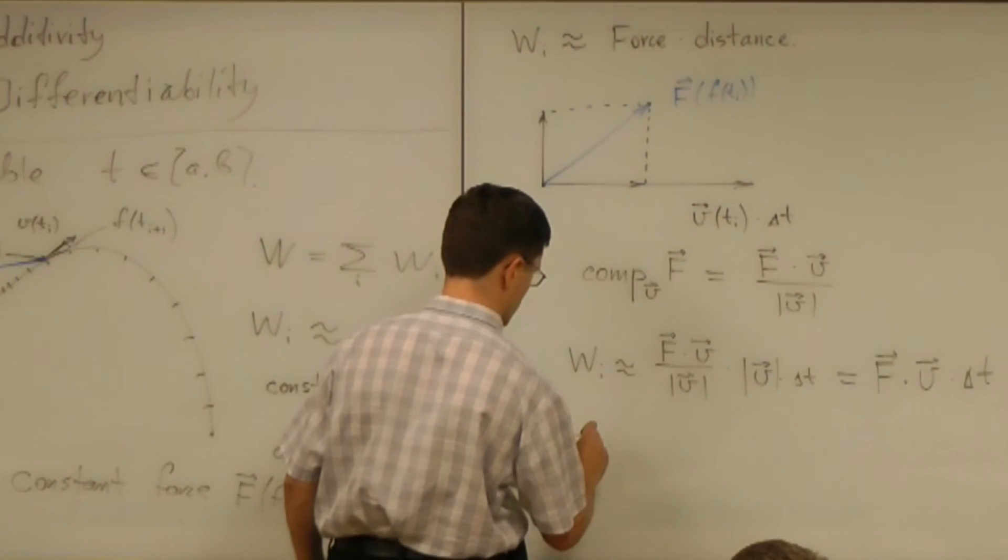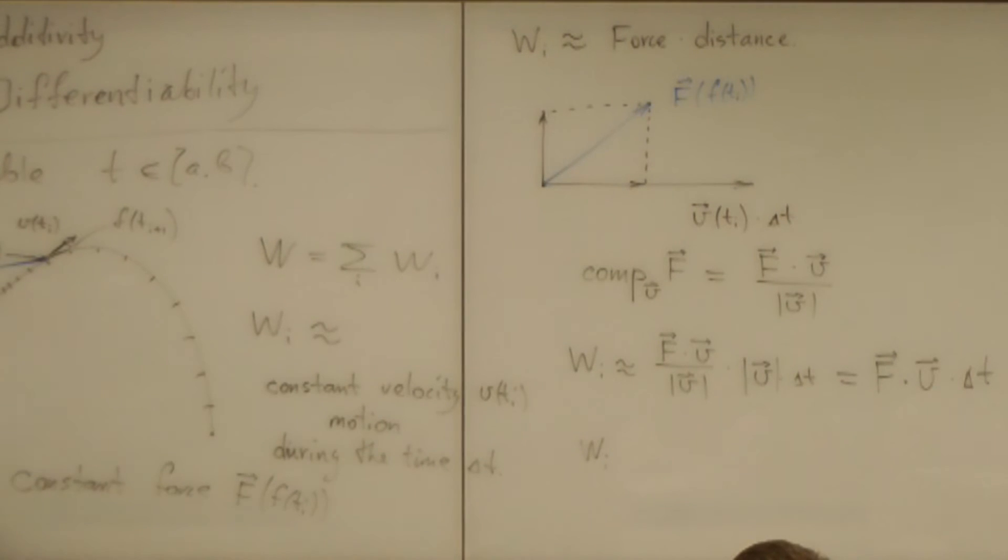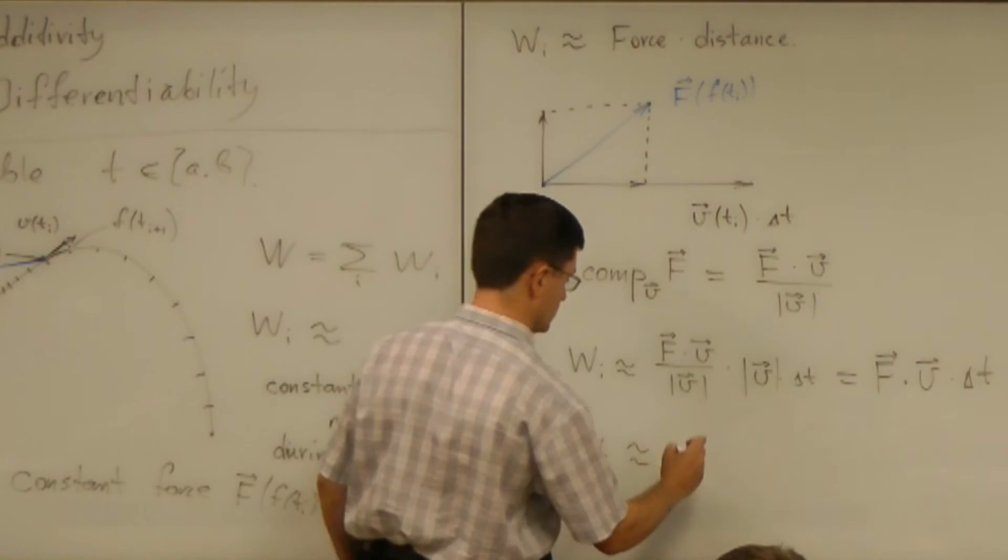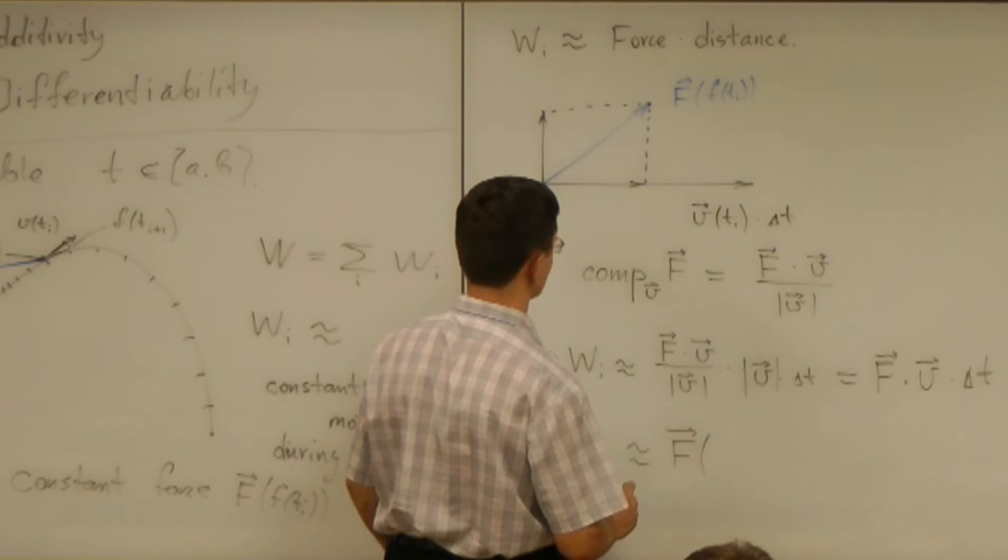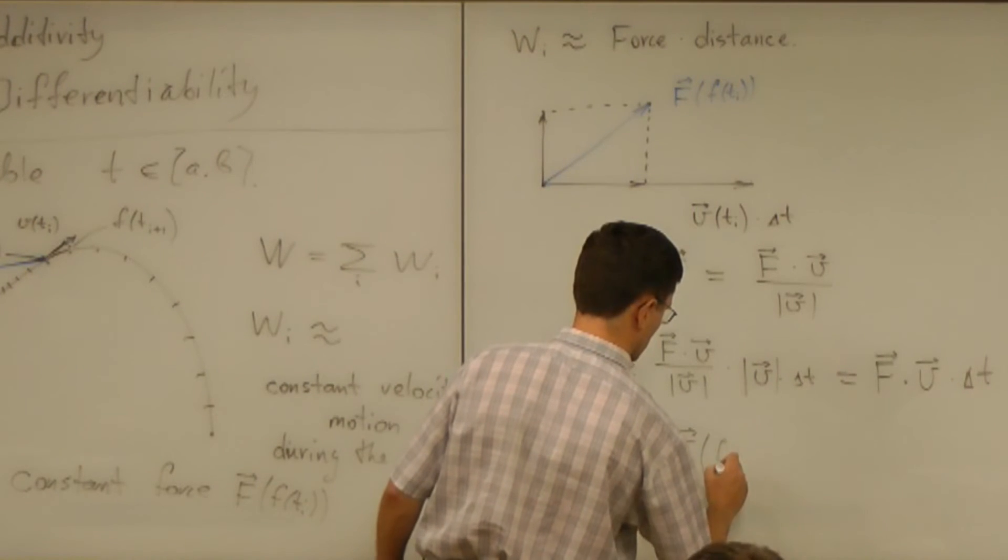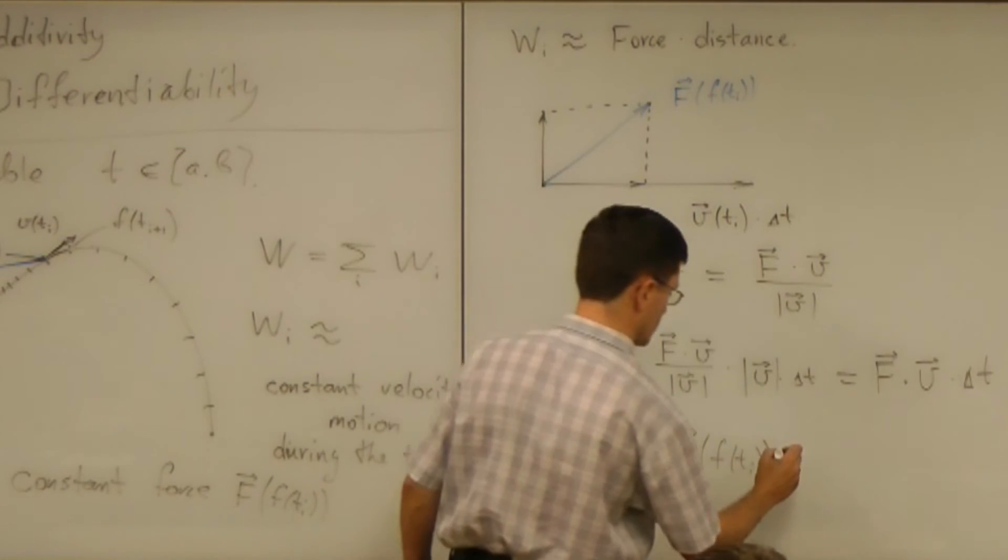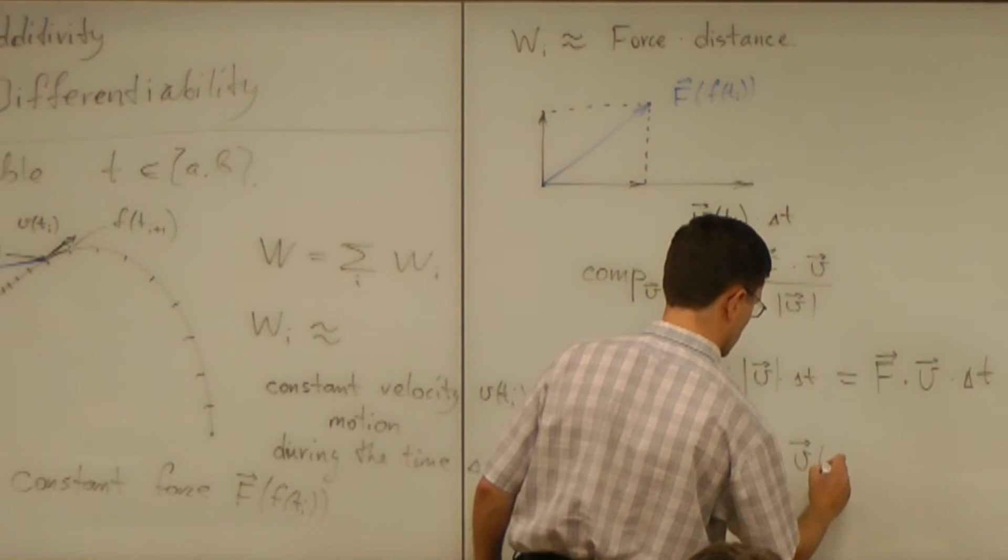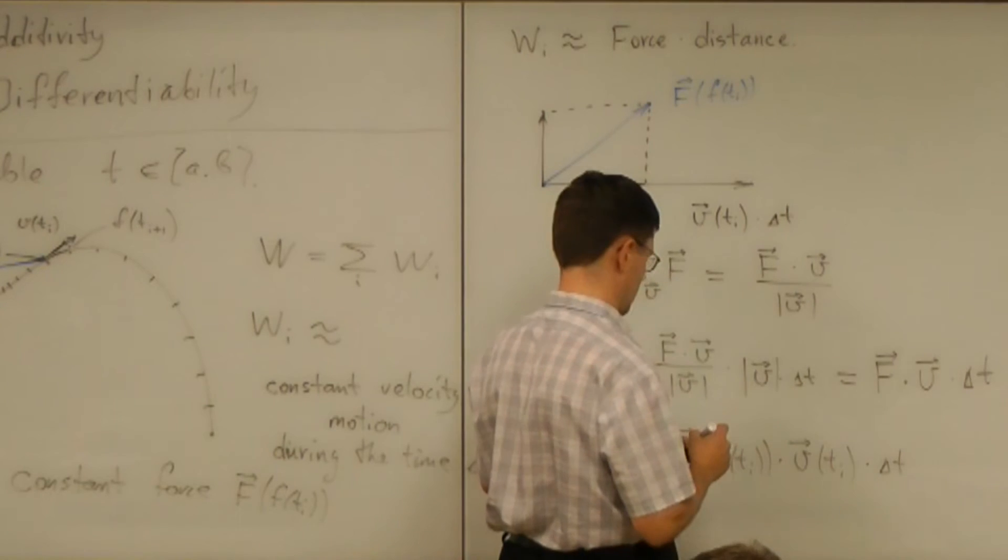To be precise now, we have the work. The work is approximately force at the point where the particle is at the time Ti dot product the velocity at the time Ti times delta T.